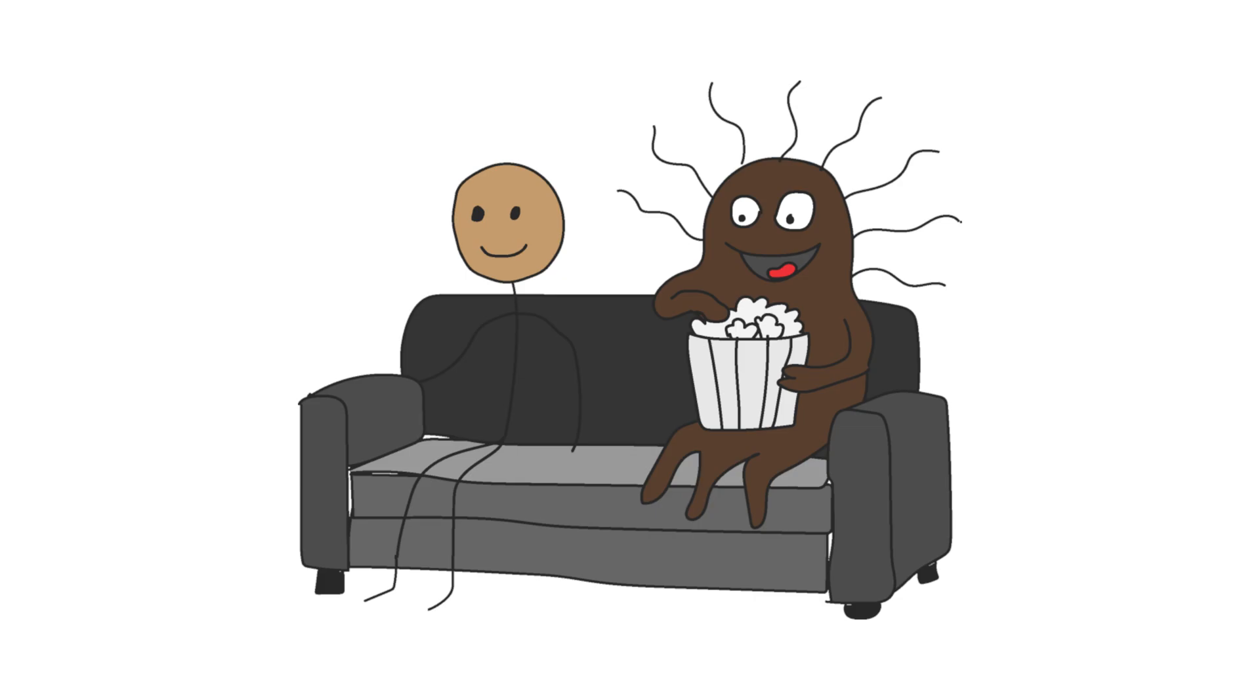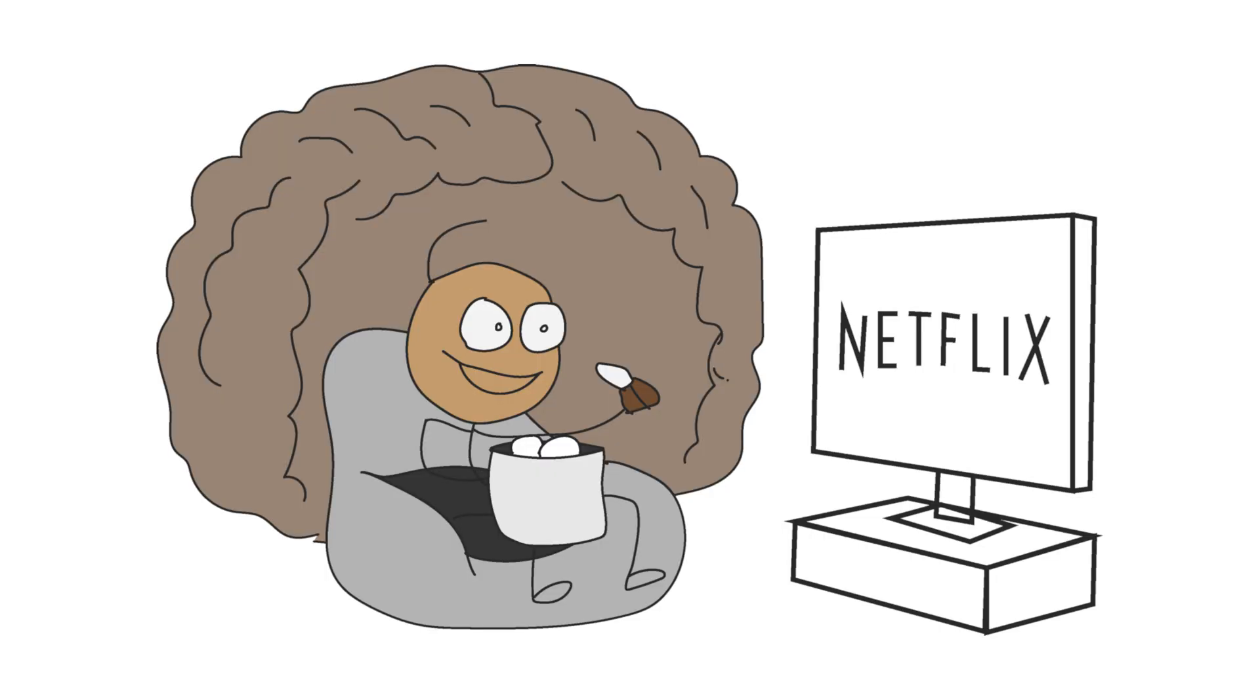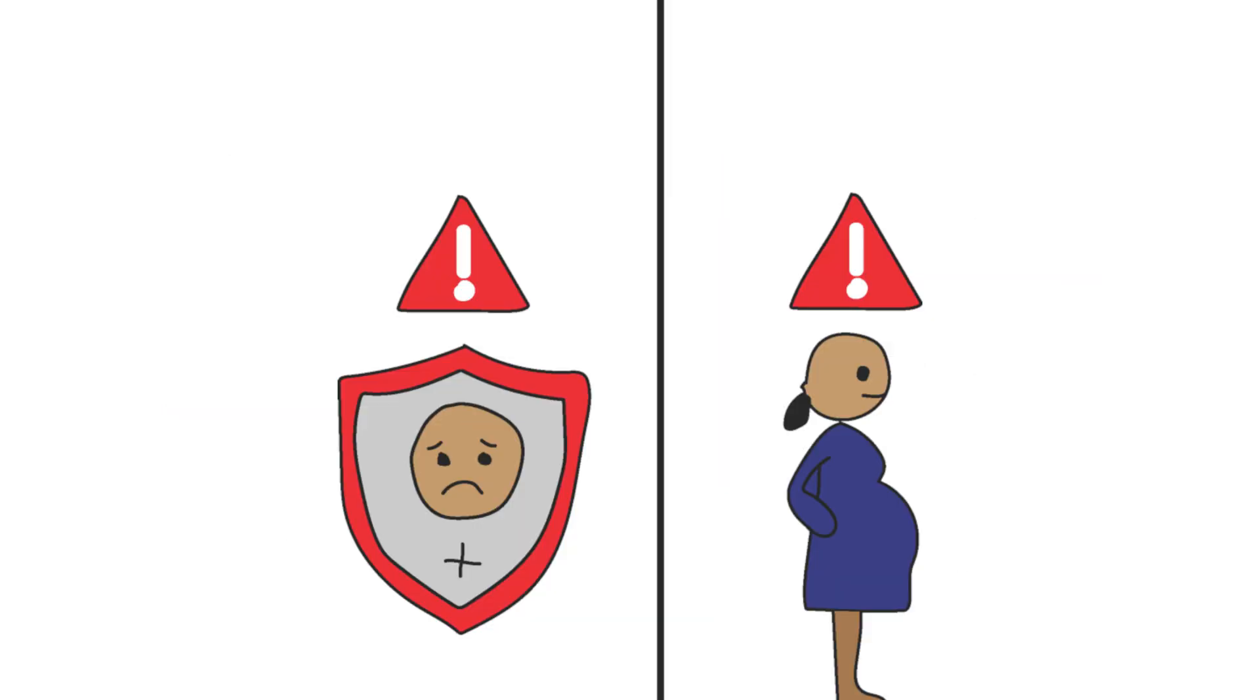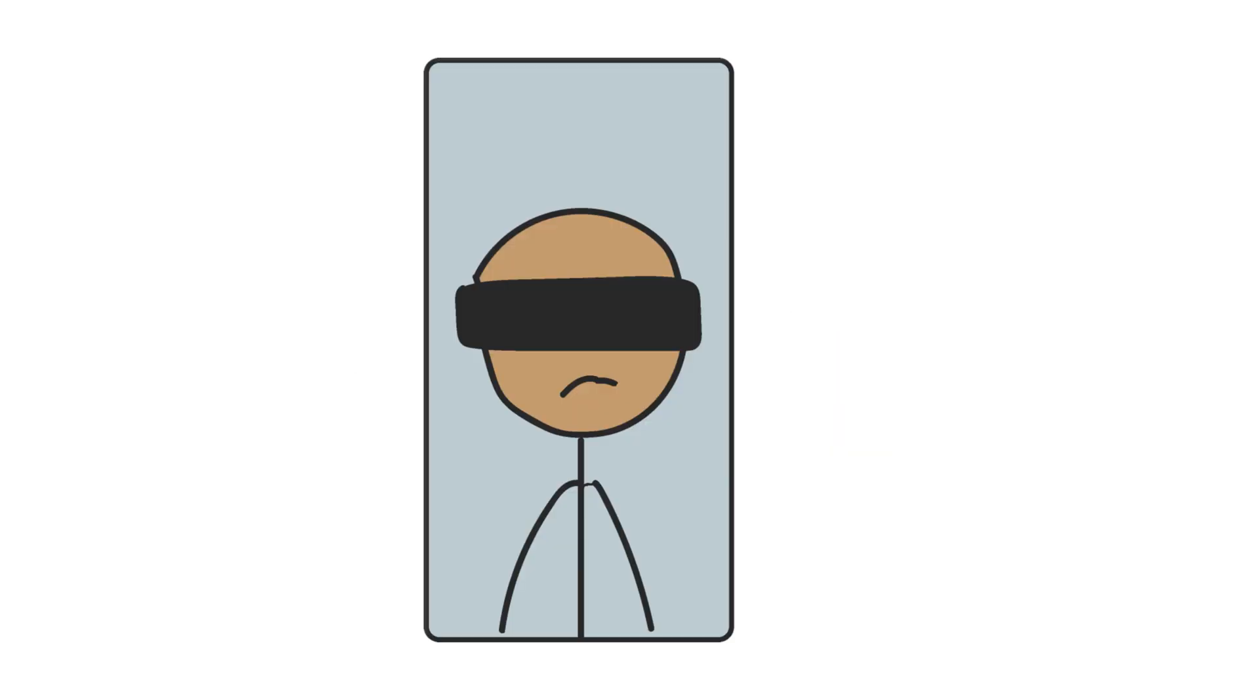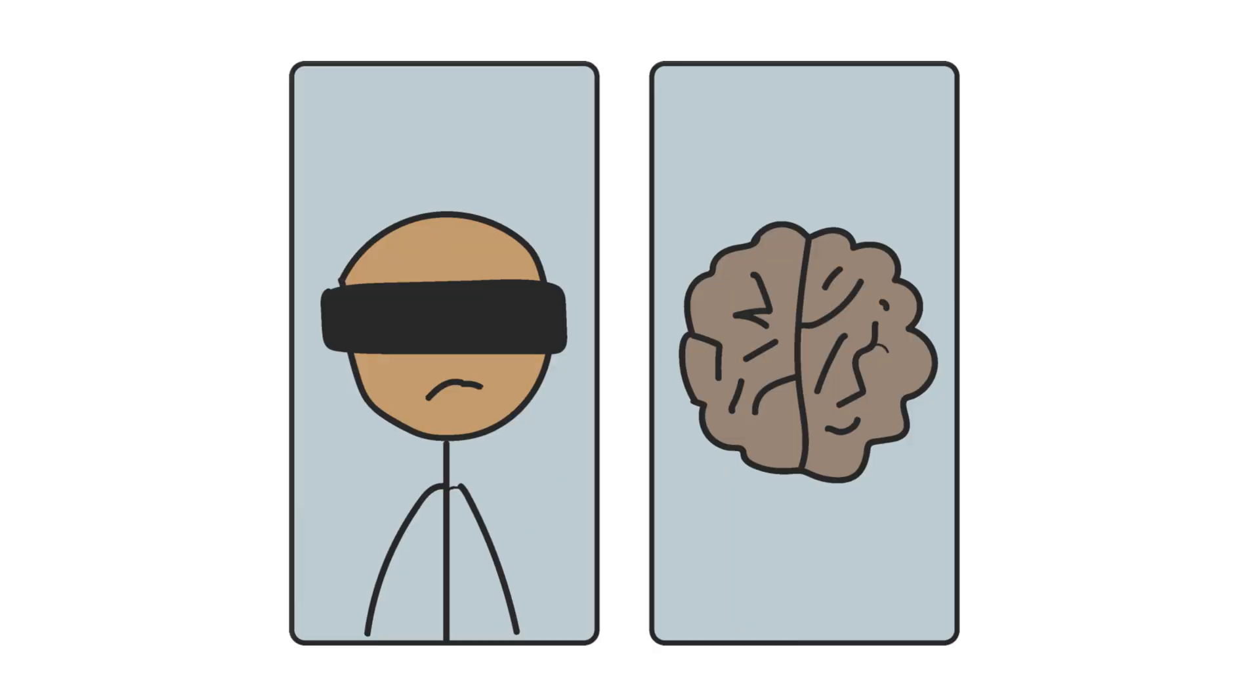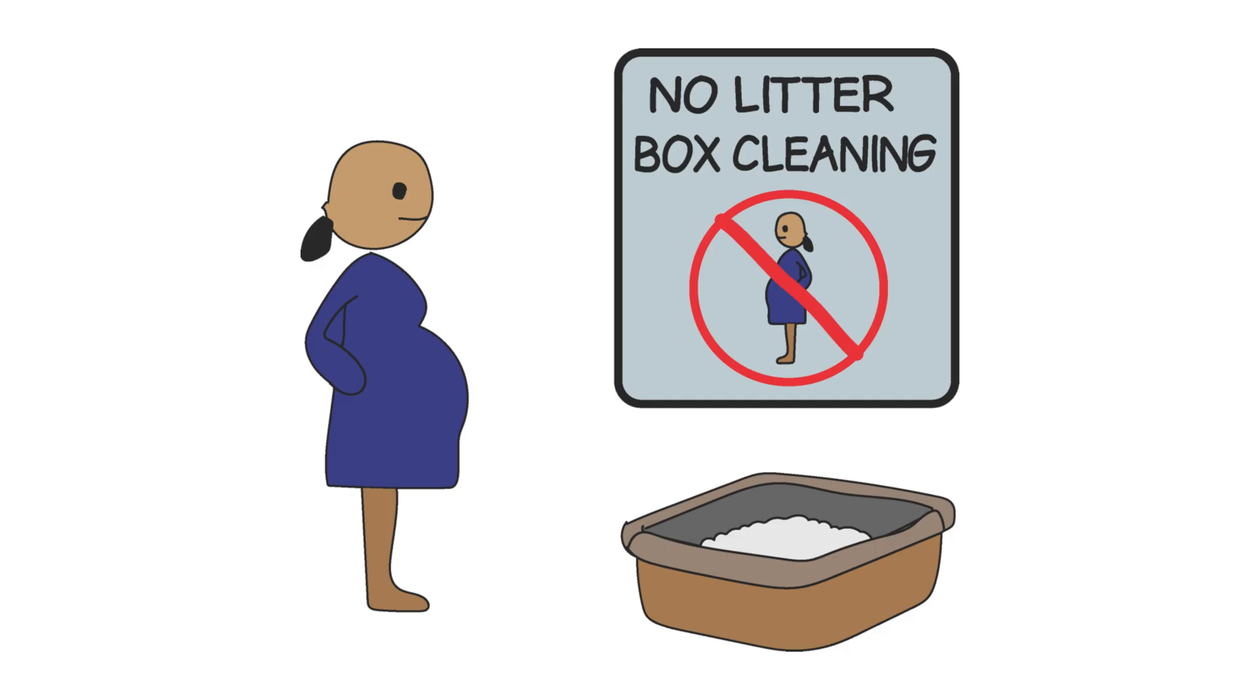But don't panic. In most cases, Toxo causes no symptoms. It just sits there quietly, camps out in your amygdala, eats chips, and watches Netflix. But if you're immunocompromised or pregnant, it gets serious. In those cases, Toxo can cause blindness, neurological damage, miscarriages. That's why pregnant women are advised: don't clean the litter box.